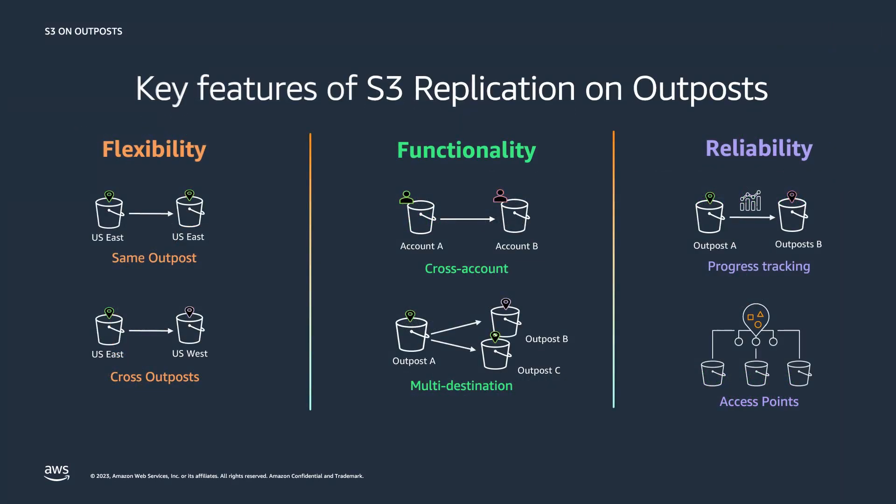We designed replication on Outpost to provide a similar and familiar experience to replication in region. We provide the flexibility to replicate to the same or different Outpost, and the functionality to support multiple destination rules as well as across accounts. We provide progress tracking in CloudWatch, and like all operations on Outposts for S3, your replication rules will be access point based.